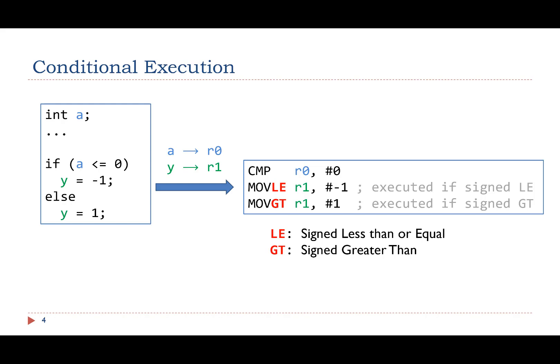Conditionally executed instructions can reduce the number of branch instructions in a program. Let's look at this example. The if-else statement in the C program sets the value of Y based on the value of A. If A is less than or equal to 0, the program sets Y to negative 1; otherwise, it sets Y to 1.